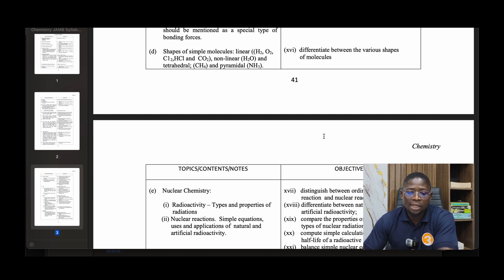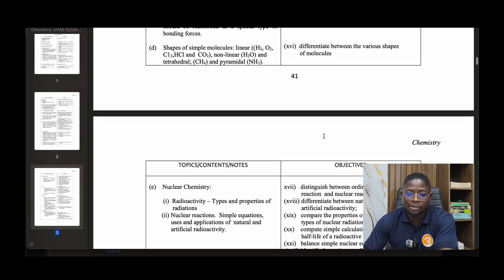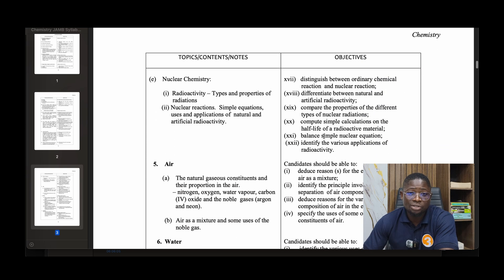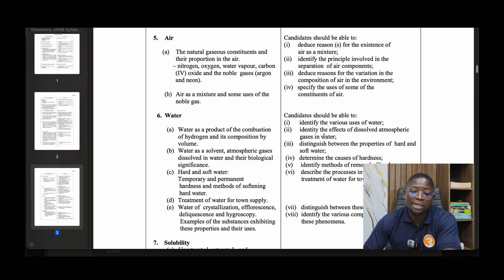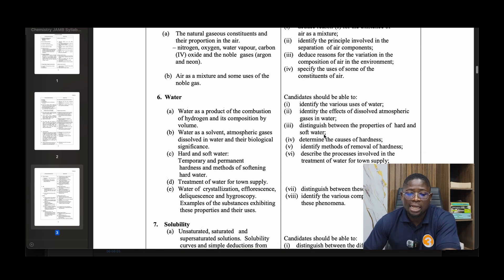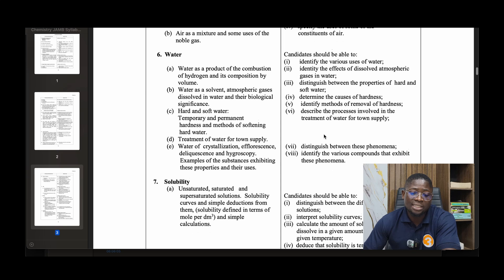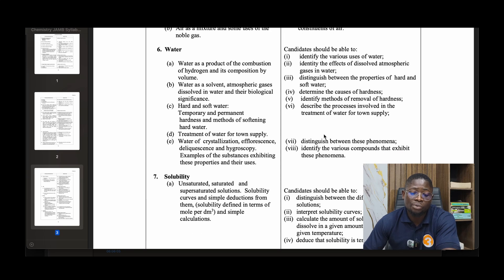Shapes of simple molecules: linear, non-linear, tetrahedral, and pyramidal. Number five: Nuclear chemistry - radioactivity, the types and properties of radiations, nuclear reactions, simple equations, uses and applications of natural and artificial radioactivity. Number six: Air - the natural gaseous constituents and their proportion in air including nitrogen, oxygen, water vapor, carbon dioxide, and noble gases like argon and neon. Air is a mixture, and some uses of noble gases. Number seven: Water as a product of combustion of hydrogen and its composition by volume.